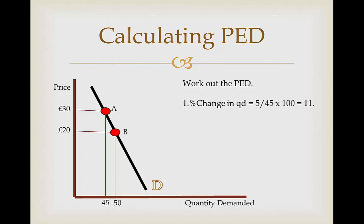So what we do is we take 5, which is the difference between 45 and 50, divide that by 45 and multiply it by 100. This gives us 11.